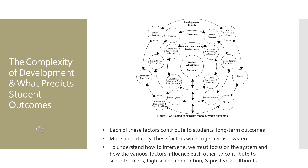Looking at this system, the outer ring is the developmental ecology. The lines between each of the factors have arrows on each end, meaning that each factor is bi-directionally linked — they influence each other and are correlated and constraining. The developmental ecology includes school resources and climate, family, siblings, community engagement and peer activities, community resources, and cultural factors, all operating together as part of the child's overall developmental ecology.